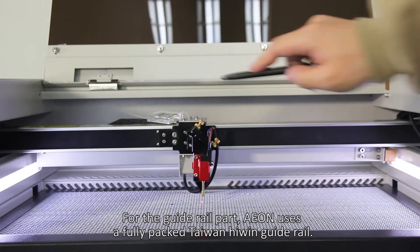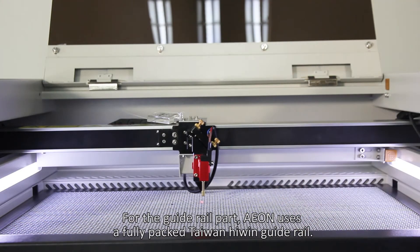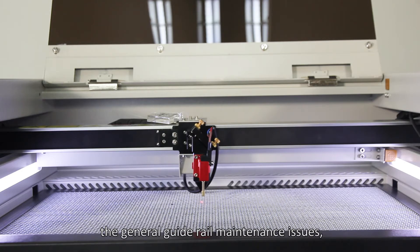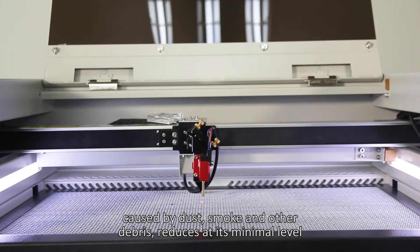For the guide rail part, IAM uses a fully-packed Type 1 Hiwin guide rail. With the protection of our unique clean-pack technology, the general guide rail maintenance issues caused by dust, smoke, and other debris are reduced to a minimum level.